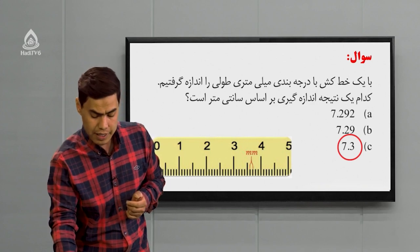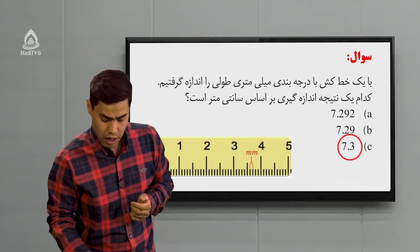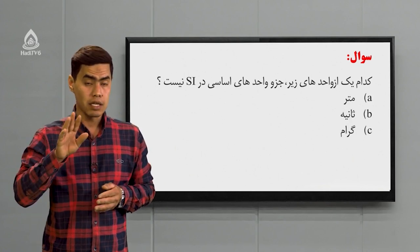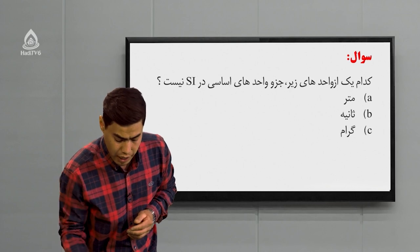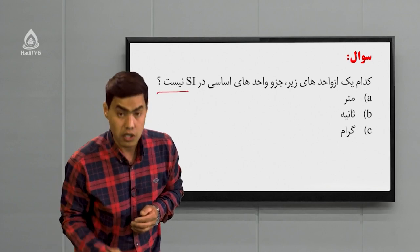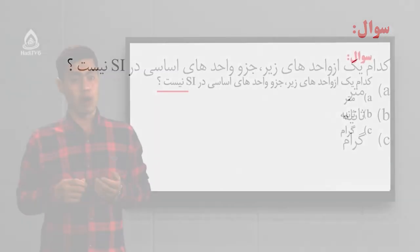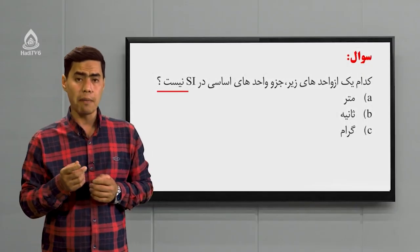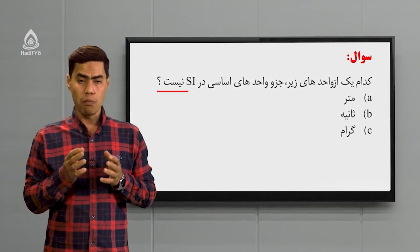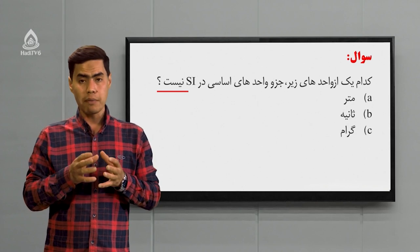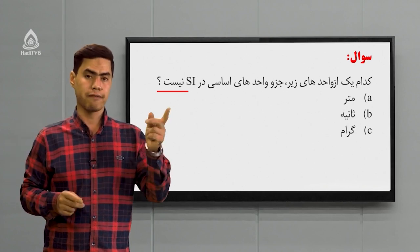یک سوال دیگه هم با هم ببینیم. گفته کدام یک از واحدهای زیر جزء واحدهای اساسی در SI نیست؟ در سوالات هواستان باشه یک کلمه‌هایی که آخر می‌آید «نیست» یا «است» اینا هواستان باشه. گزینه الف: متر، ب: ثانیه، ج: گرام. شاگرد عزیز در جلسه قبل اگر یادتان باشه ما آمدیم واحدهای اساسی کمیت‌ها رو تعریف کردیم.